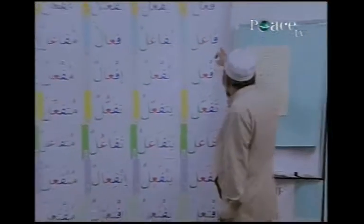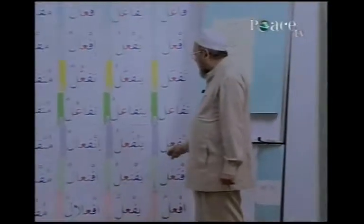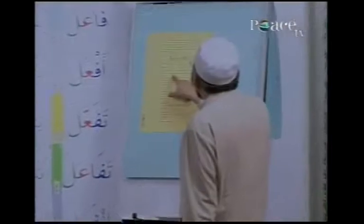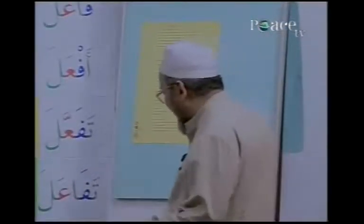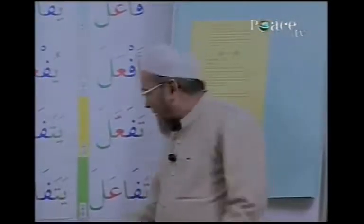Alhamdulillah, it was possible for us so far to learn eight derived forms, starting from two. Now we are inviting the ninth one. It doesn't take PP, so in the same stencil we have got it. It is formed by prefixing alif maksur, after making the radical fa quescent and placing shadda on the radical laam. As part of formation is concerned, alhamdulillah, we are fully aware of the formation.